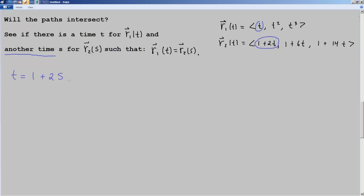And then we'll take the second component, T squared and 1 plus 6S. And keeping in mind that T is equal to 1 plus 2S, we'll rewrite this as (1 plus 2S)² equals 1 plus 6S. Now from here, we just have to do a little bit of expanding. 1 plus 4S squared equals 1 plus 6S. Do a little bit more simplifying and we'll get 4S² minus 2S equals 0.